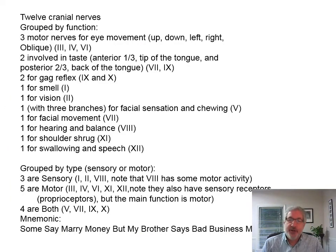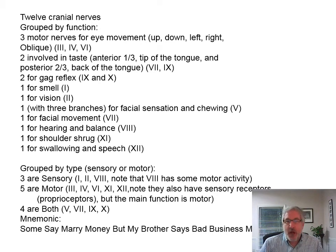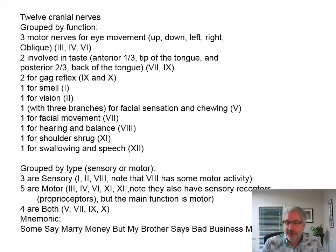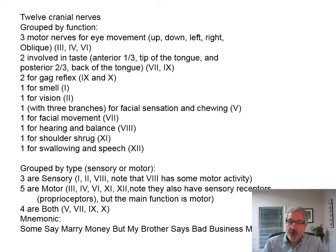The 12 cranial nerves can be grouped various ways. By function: there are three motor nerves for eye movement (three, four, and six), two involved in taste (seven and nine), two for the gag reflex (nine and ten), one for smell, one for vision, one with three branches for facial sensation and chewing (trigeminal, including innervation of the mastoid muscle for jaw movement), one for facial movement (seven), one for hearing and balance (eight), one for shoulder shrug (eleven), and one for swallowing and speech (hypoglossal).